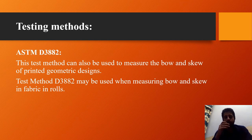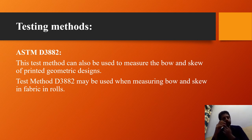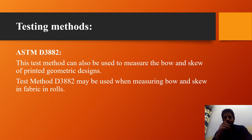ASTM D3882 can also be used to measure the buoyant skew of printed geometric designs. Test method D3882 covers the determination of buoyant skew in fabrics in rolls and courses in knitted fabrics.